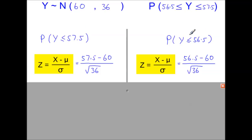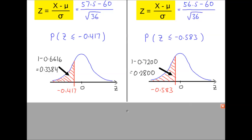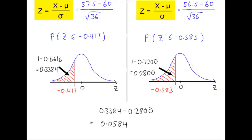We carry out two separate calculations, standardizing on each side to obtain the two Z values. We then go to the normal tables and look up these Z values. We apply 1 minus to each probability looked up from the tables because less than half of the sketch is shaded on each side. Finally, we subtract the smaller probability from the larger one to obtain the final answer.